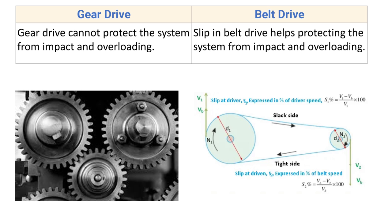Gear drive cannot protect the system from impact and overloading. The motion is transmitted between the two shafts by means of a rigid link, which is the gear. If the load on the driven shaft increases and there are vibrations in the system, those vibrations will be transferred to the prime mover or driver shaft, because the system cannot protect the driver shaft when connected by a rigid link.